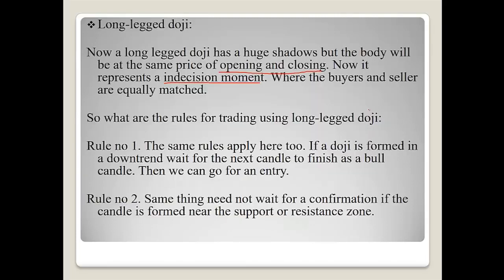The rules for trading using long-legged doji are the same as for the spinning top. Rule number one: if a doji is formed in a downtrend, wait for the next candle to finish as a bullish candle, then we can go for an entry. Rule number two: we need not wait for the confirmation if the candle is formed near a support or resistance. Let's look at an example.